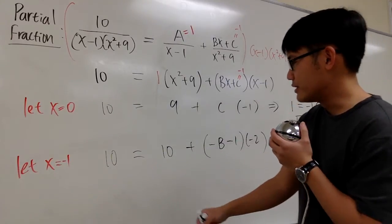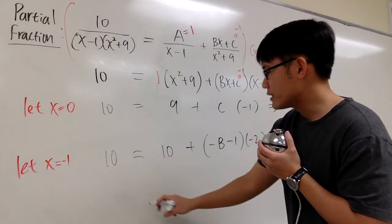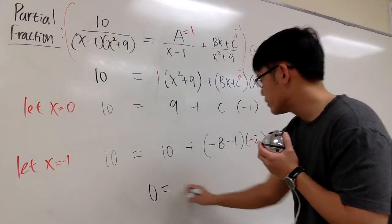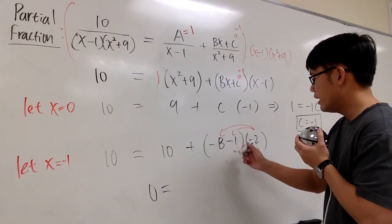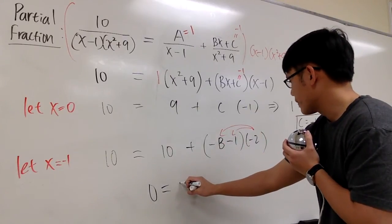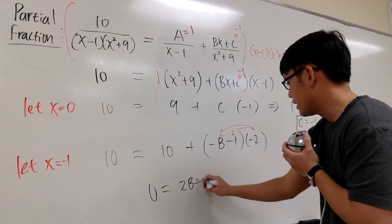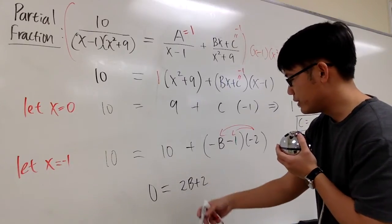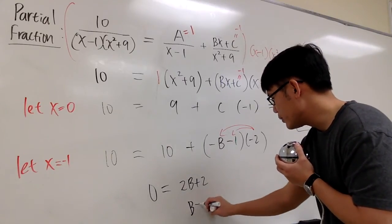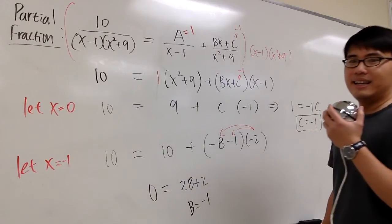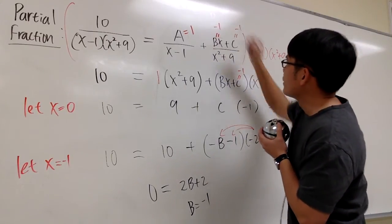And let's just solve this really quickly. -10 on both sides, we have 0 equals to, I can distribute the -2 right here. And I have 2B + 2. And you can do this, do that. You get B is equal to -1 as well. So B is equal to -1.